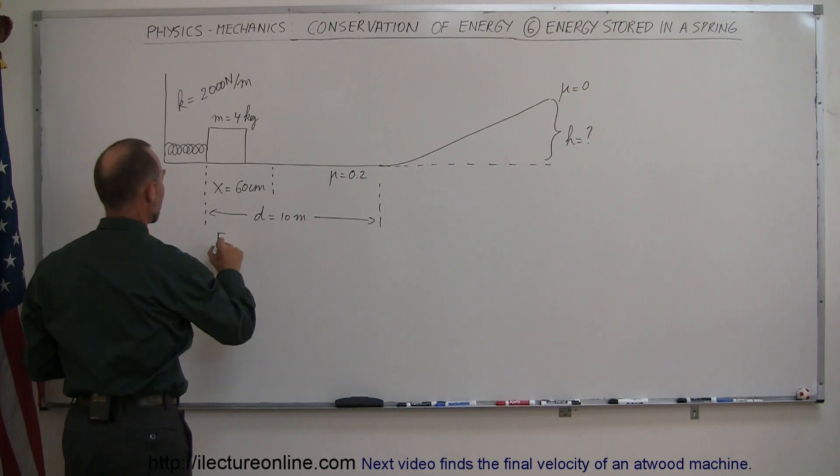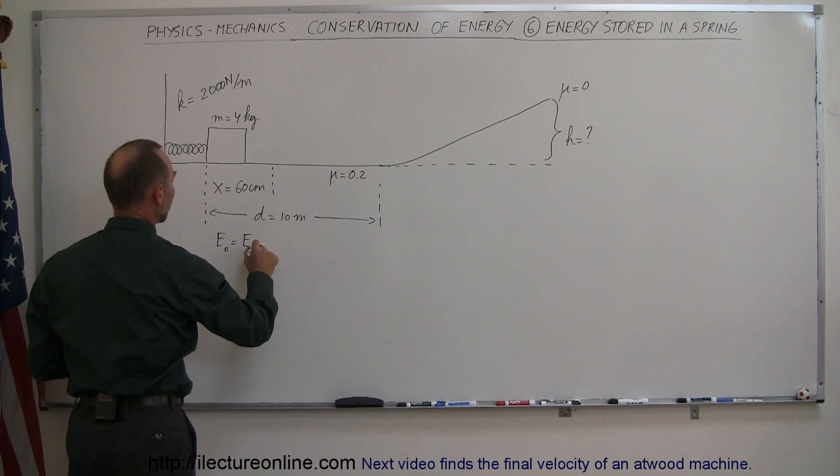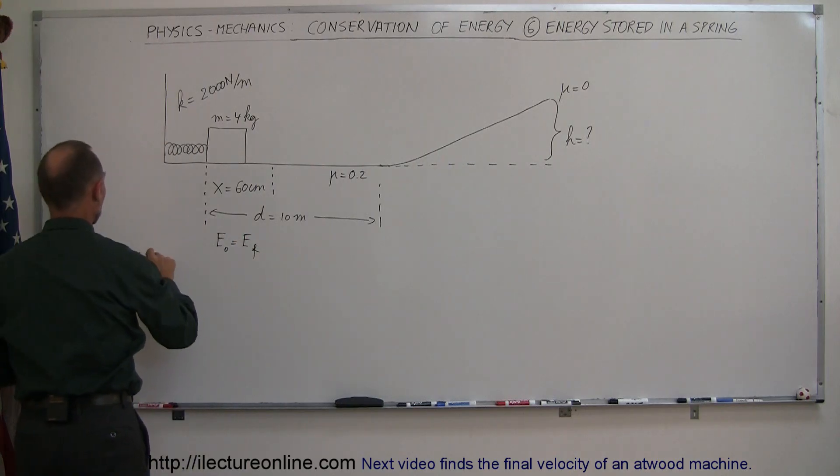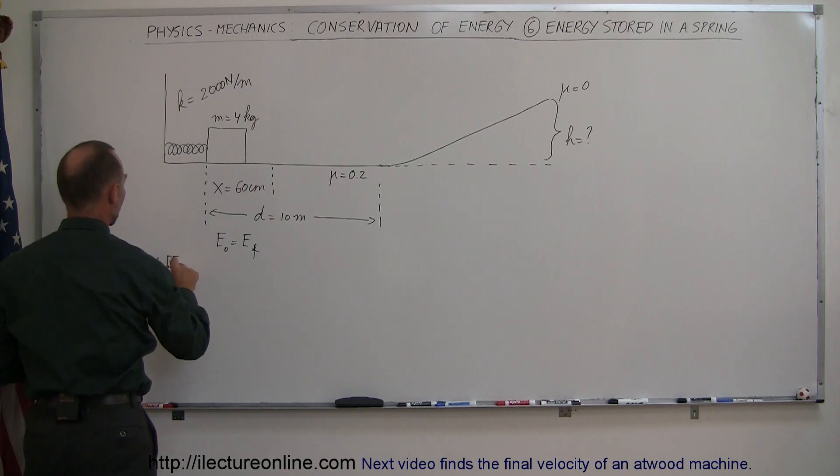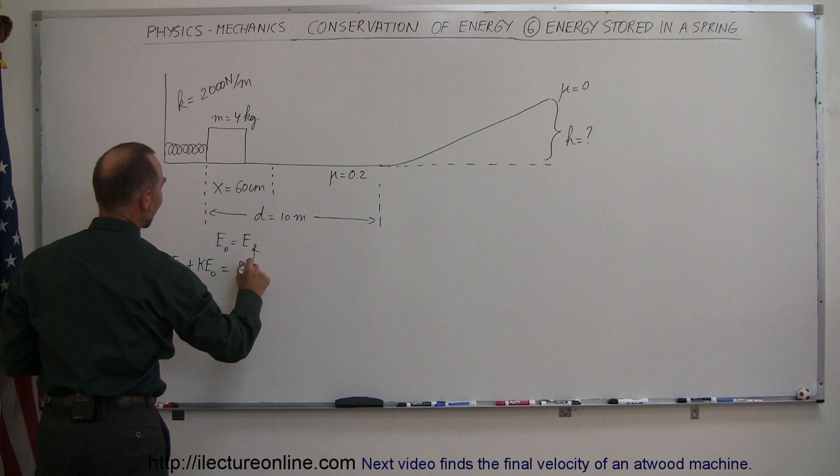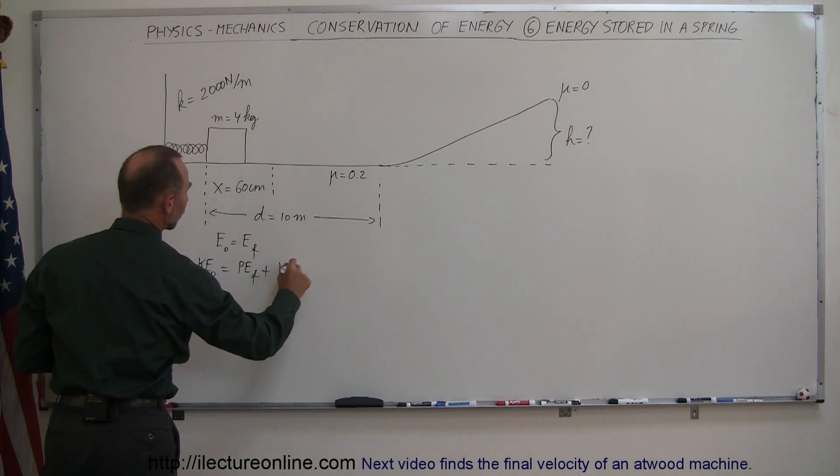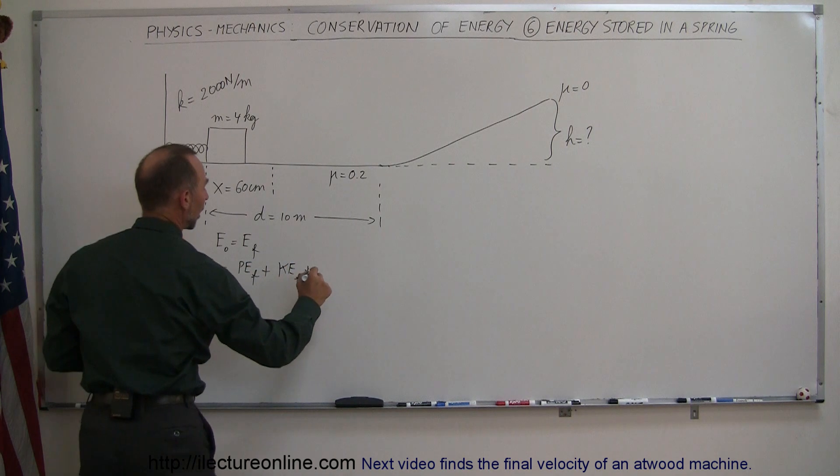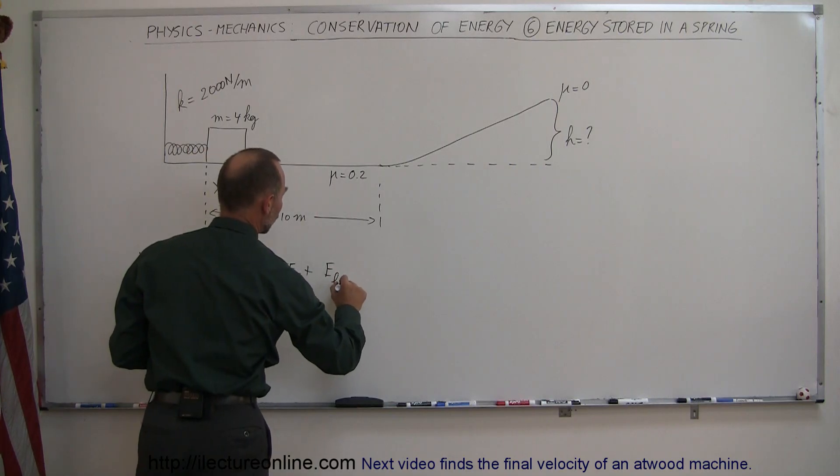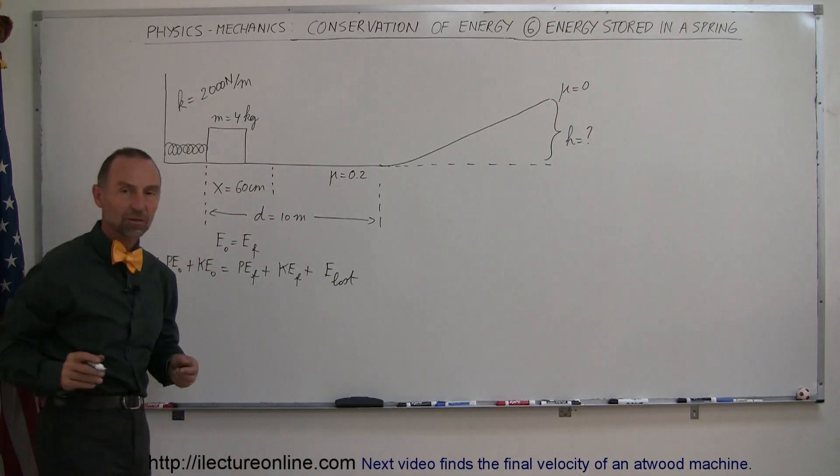we're going to use the equation energy initial equals energy final, or any work put into the system, plus any initial potential energy, plus any initial kinetic energy, is equal to any final potential energy, plus any final kinetic energy, plus any heat lost, or energy lost, due to overcoming friction or wind resistance and so forth.